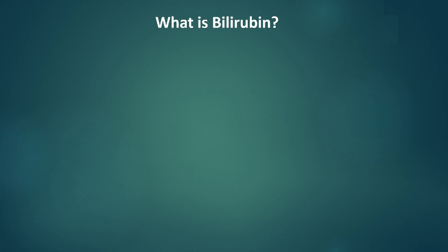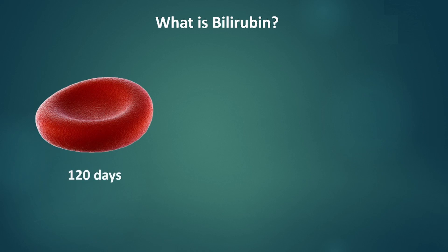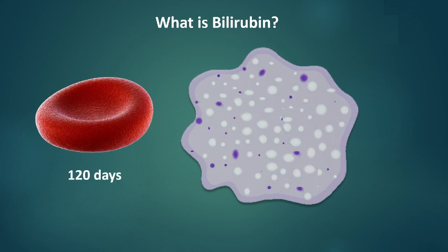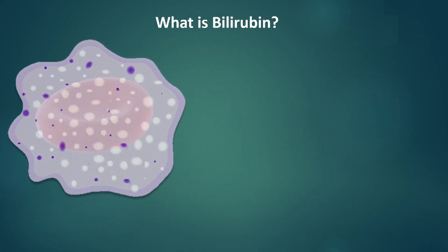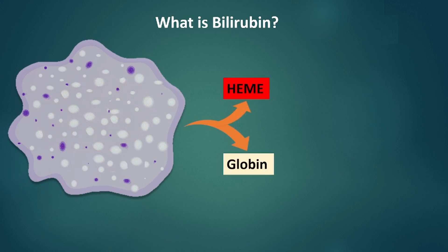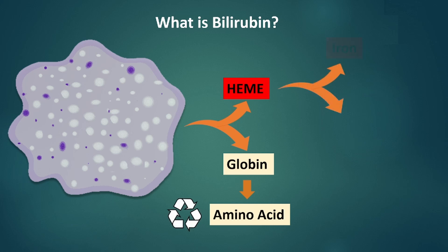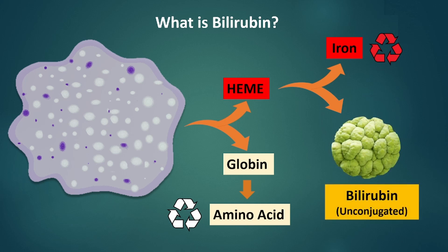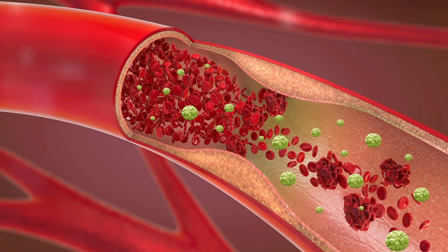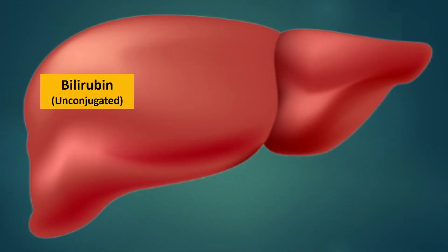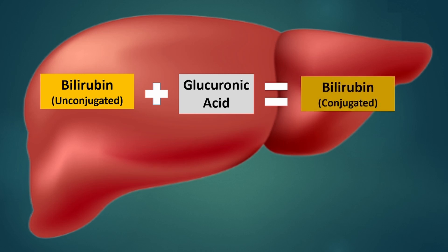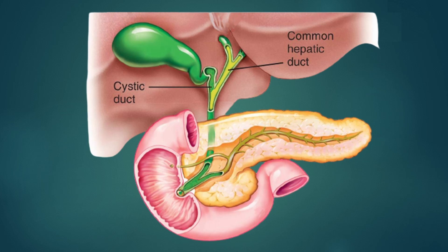Rationale for incorrect answers: What is bilirubin? It is a yellowish pigment made during the breakdown of red blood cells. After 120 days of circulation, red blood cells reach their life cycle and are engulfed by macrophages produced by the liver and spleen. The red blood cell is broken down into heme and globin. Globin is further synthesized into amino acids, recycled by the body. Heme is broken down into iron, also recycled. Bilirubin forms in unconjugated or water-insoluble form, is excreted into the bloodstream, and through the help of albumin, is transported to the liver. It combines with glucuronic acid forming conjugated or water-soluble bilirubin, then excreted through the common bile duct down to the duodenum, giving feces a yellowish-brown color.